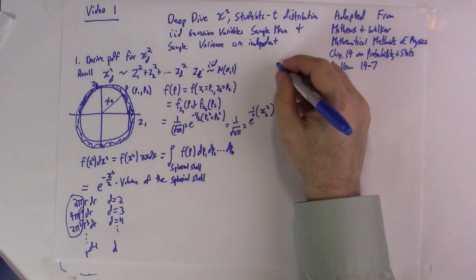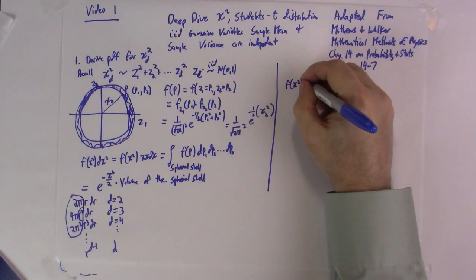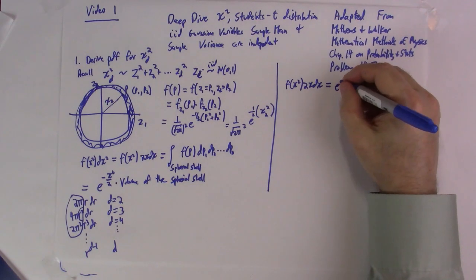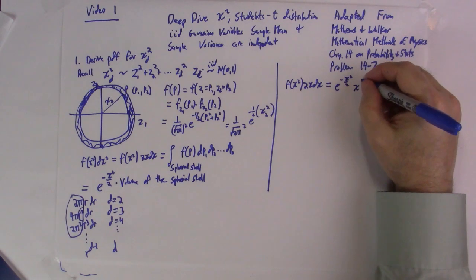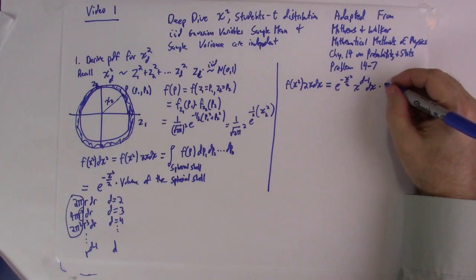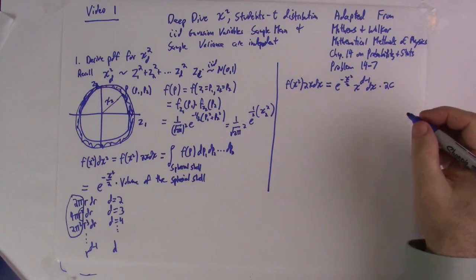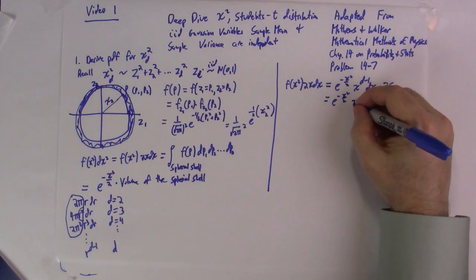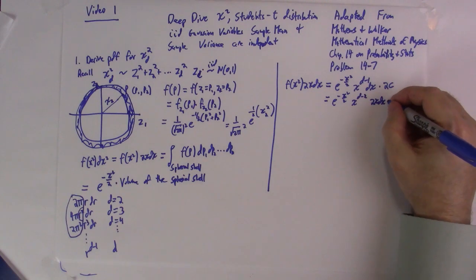So, moving on, this is just equal to, we have f of chi-squared 2 chi d chi is equal to e to the minus chi-squared over 2 times chi to the d minus 1 d chi times some constant, which we'll evaluate by normalizing the probability distribution. I'm going to write it as a 2c right now, and you'll see why in a second. So, this is equal to e to the minus chi-squared over 2, chi to the d minus 2, 2 chi d chi. That's why I put the 2 there, times c.